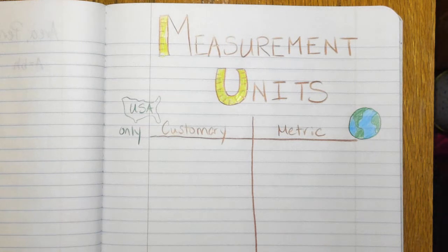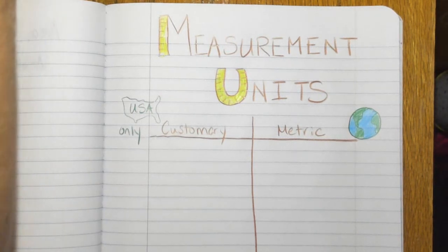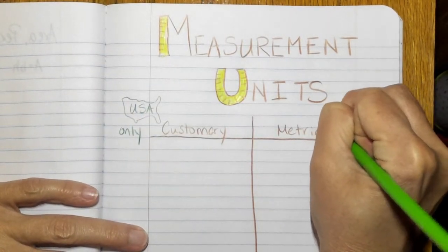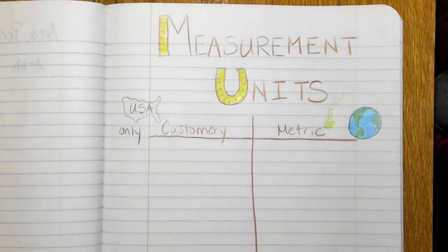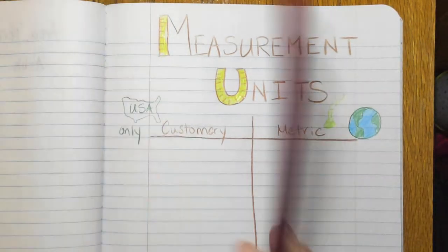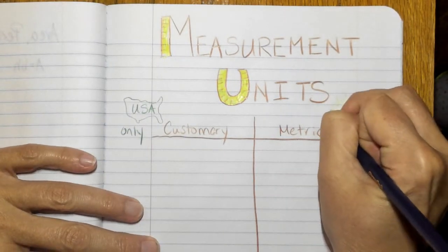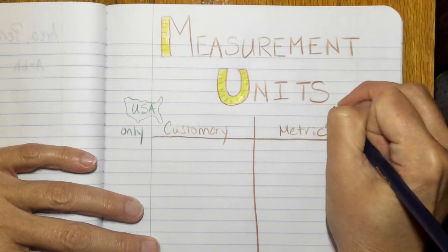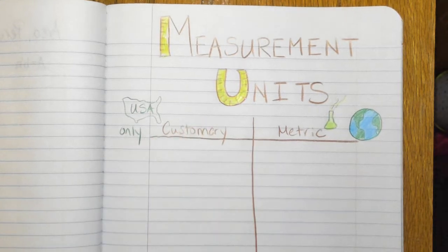And in general you're going to use metric in science. I'm getting a little bit of science going here. It's really hard to see, I'm going to outline it. So you use metric in science but you use customary for everything else.